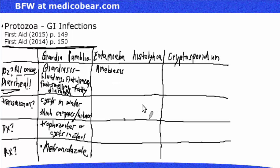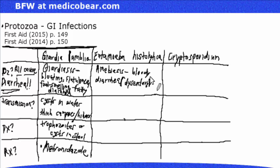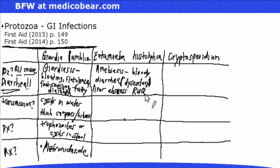Entamoeba histolytica causes amoebiasis. This is different from giardiasis in that it causes bloody diarrhea, also referred to as dysentery — a word describing inflammation of the intestines accompanied by bloody diarrhea. With amoebiasis, we're also going to see a liver abscess along with right upper quadrant pain, clearly different from giardiasis. The liver abscess is sometimes described as an anchovy paste exudate.